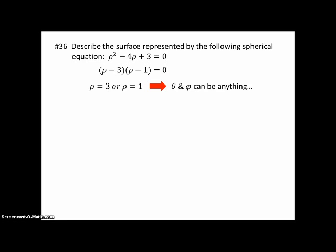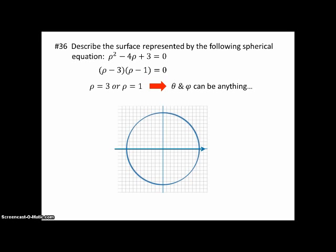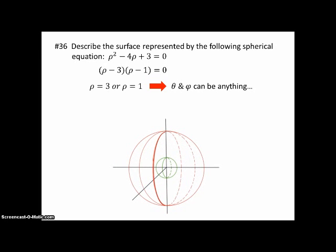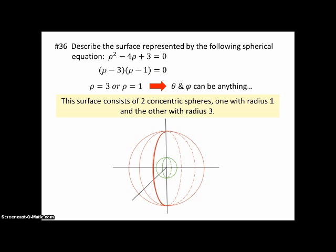Number 36. Describe the surface represented by the following spherical equation, rho squared minus 4 rho plus 3 equals 0. Well, that factors nicely into rho minus 3 times rho minus 1 equals 0, which means either rho is 3 or rho is 1. So that means the distance from the origin is always 3 or always 1. Theta and phi can be anything. So that's going to, it's like a radius swinging around drawing things. Now in 2D, what would that do? Well, it would draw a circle, right? It would just keep swinging around in any angle at all, and you'd get a circle. So in 3D, what would you get? Well, you'd get spheres. You'd get one sphere with a radius of 1 and one sphere with a radius of 3. So this surface consists of two concentric spheres, one with radius 1 and the other with radius 3.